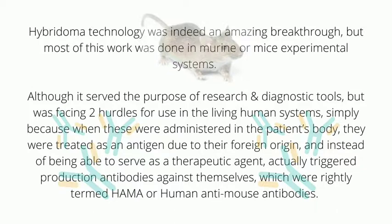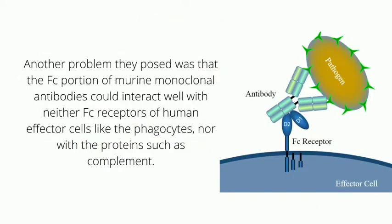Instead of serving as a therapeutic agent, they actually triggered the production of antibodies against themselves. These were rightly termed HAMA, or human anti-mouse antibodies. Another problem was that the Fc portion of murine monoclonal antibodies could interact well with neither Fc receptors of human effector cells like phagocytes, nor with proteins such as complement.